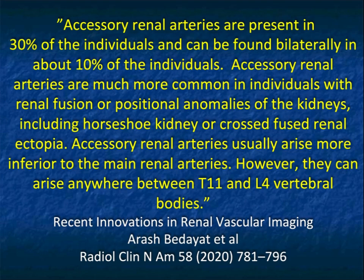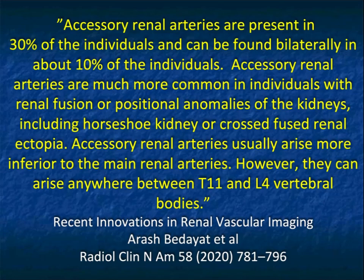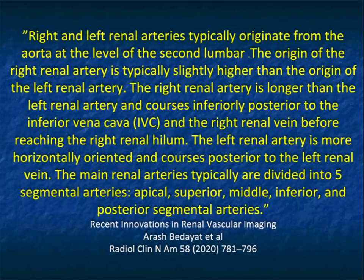Looking at renal donors, accessory renal arteries are present in about 30% of individuals and can be found bilaterally in about 10% of cases. They are more common in individuals with renal fusion or positional anomalies, including horseshoe kidneys or cross-fused renal ectopia — those patients would not be eligible to be donors. Accessory renal arteries usually arise more inferior to the main renal artery, but not always. Small branch vessels going to the upper pole are common. These renal arteries can be anywhere between T11 and L4, so it's very important to scan that entire area.